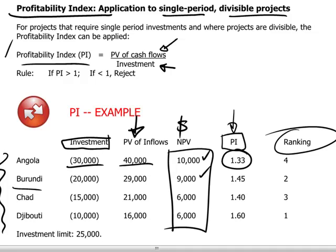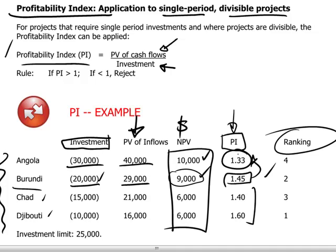The Burundi project, which has a lower net present value, nevertheless gives you more bang for the buck — creating a multiple of 1.45 times the investment amount. In other words, the present value of inflows of $29,000 relative to the amount to be invested is 1.45 times. That's better than Angola. The same is true for both Chad and Djibouti — they have higher PIs, and therefore in terms of rankings we would put our scarce capital resources into Djibouti first.